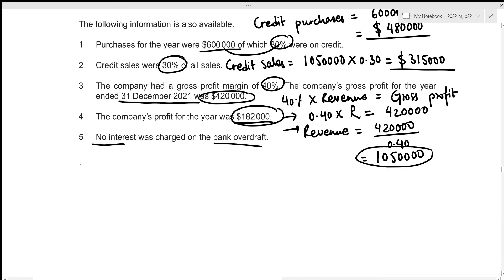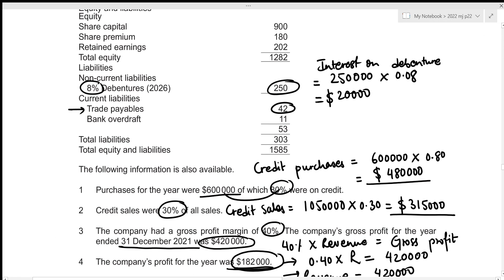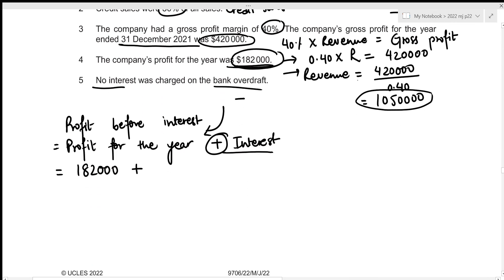Now we can figure out profit before interest. That is profit for the year plus the interest on debentures. We add the interest back because when calculating profit for the year, interest was subtracted as an expense, so to get profit before interest we reverse that. Profit before interest = 182,000 + 20,000 = 202,000.